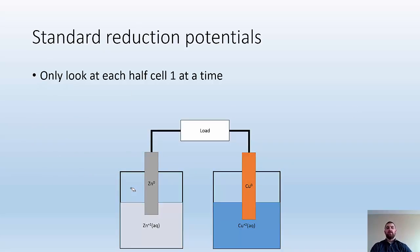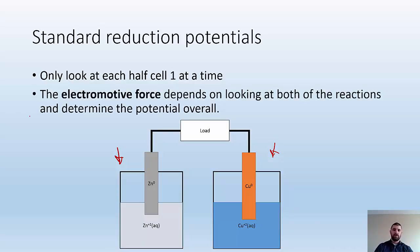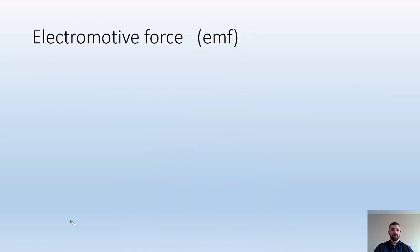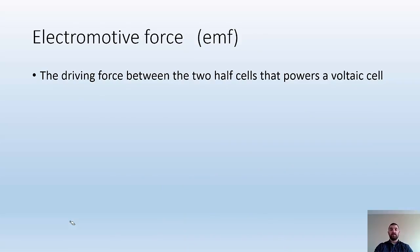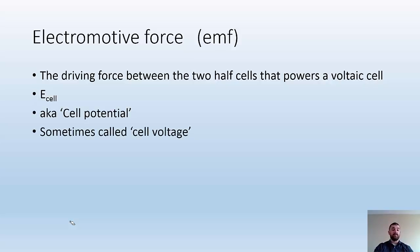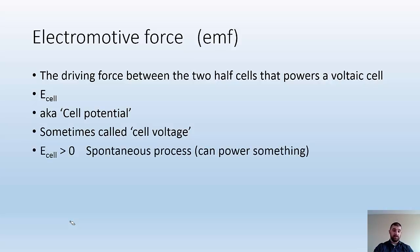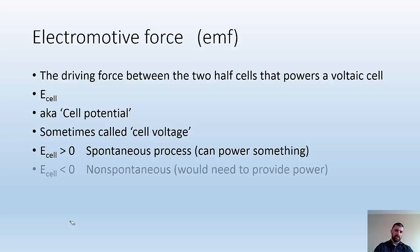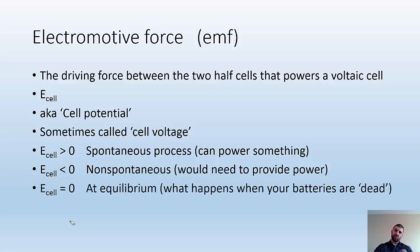Standard reduction potentials only look at one half cell at a time. But if we want to talk about the whole cell — the big picture — we have to talk about the electromotive force, which depends on both half reactions to determine the overall potential. Electromotive force is the driving force between two half cells that powers a voltaic cell, denoted E-subscript-cell, sometimes called cell potential or cell voltage. If E-cell is greater than zero, it's a spontaneous process — you can power something. If E-cell is less than zero, it's non-spontaneous. And if E-cell equals zero, you are at equilibrium — basically what happens when batteries are dead.